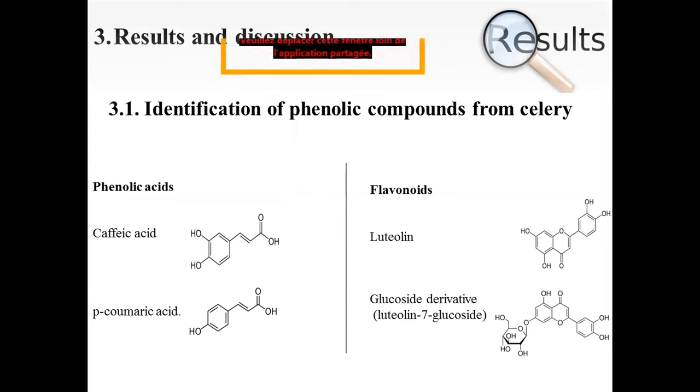When compared with standards, two phenolic compounds and two flavonoids were identified from celery. The phenolic acids were caffeic and p-coumaric acid and the flavonoids were the luteolin and its glucoside derivatives.